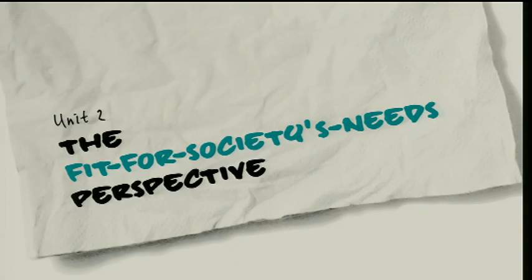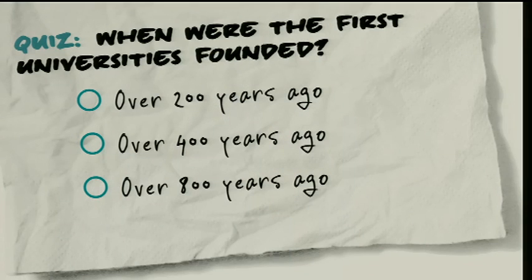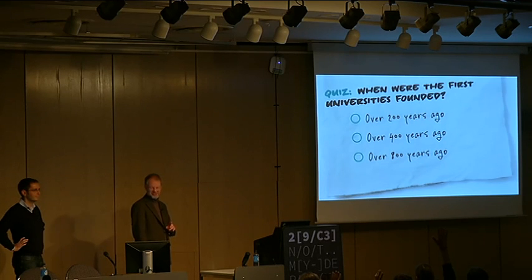So what's in there for society? What does society actually need? Again, we start with a quiz. When were the first universities founded? 200 years ago? 400 years ago? 800 years ago? The majority says 800 years — you're right. Too easy a quiz.